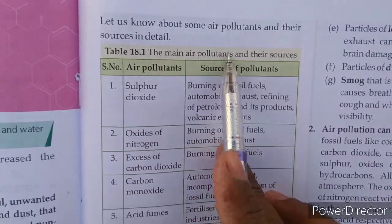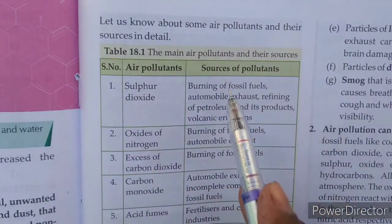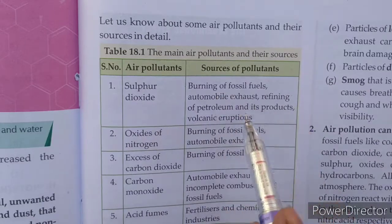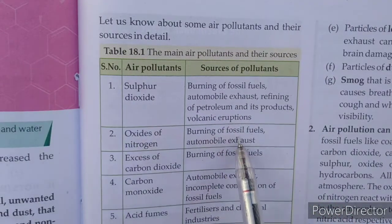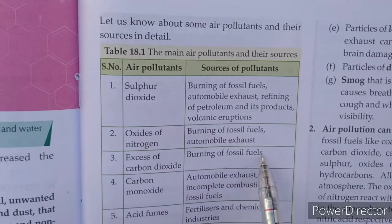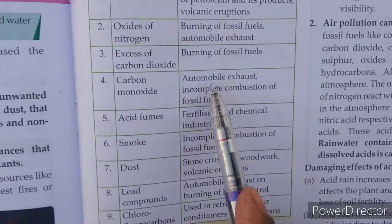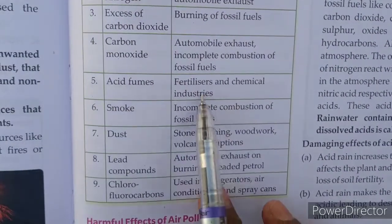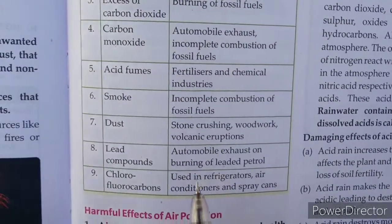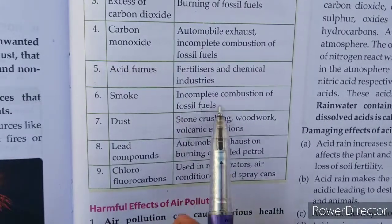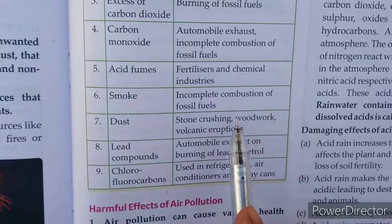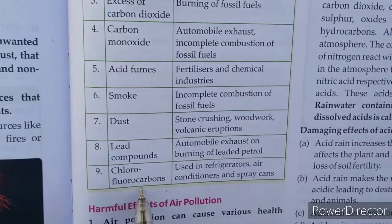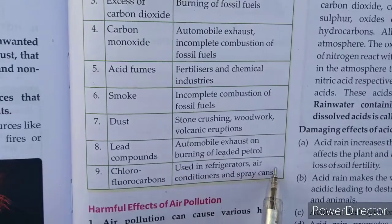Air pollutants and their sources: Sulfur dioxide — burning of fossil fuel, automobile exhaust, refining petroleum, volcanic eruption. Oxides of nitrogen — burning of fossil fuel, automobile exhaust. Excess carbon dioxide — burning of fossil fuel. Carbon monoxide — automobile exhaust and incomplete combustion of fossil fuel. Acid fumes — fertilizers and chemical industry. Smoke and dust — incomplete combustion of fossil fuel, stone crushing, woodwork, volcanic eruption. Lead compounds — automobile exhaust, burning of leaded petrol. Chlorofluorocarbons (CFCs) — used in refrigerators, air conditioners and spray cans.